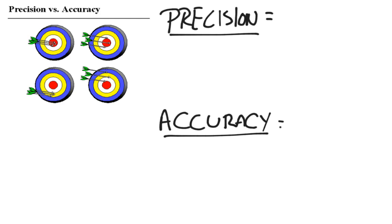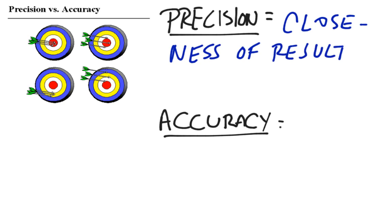Precision primarily deals with how close your results are to each other, so you can think about precision as the closeness or the repeatability of your results. Accuracy, however, is how close you are to the target, your closeness to the target.